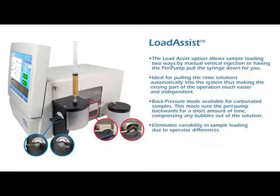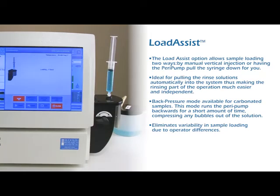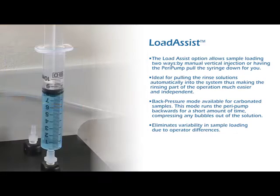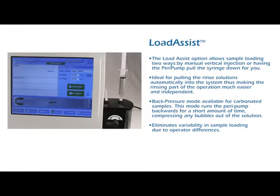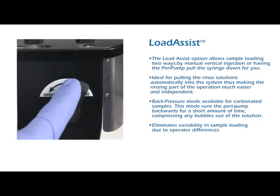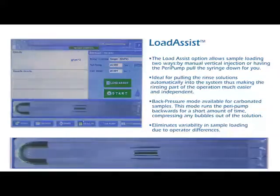Load assist: the load assist option allows sample loading two ways — by manual vertical injection or having the para-pump pull the syringe down for you. Ideal for pulling rinse solutions automatically into the system, making the rinsing part of the operation much easier and independent. Back pressure mode is available for carbonated samples; this mode runs the para-pump backwards for a short period of time, compressing any bubbles out of the solution. Eliminates variability in sample loading due to operator differences.